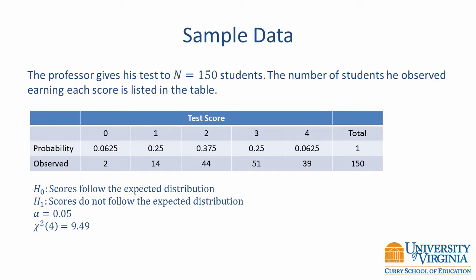To conduct the test, we select a significance level of 0.05. And we can use a table to find our chi-square critical value. In this case, we have a chi-square with 4 degrees of freedom and the critical value is 9.49.